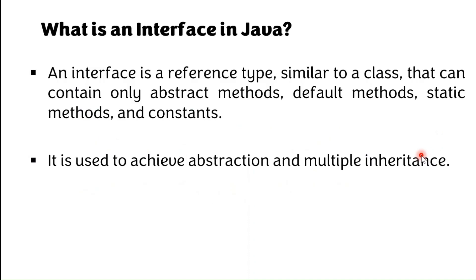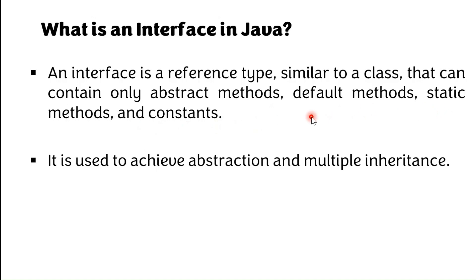An interface is a reference type, similar to a class, that can contain only abstract methods, default methods, static methods, and constants. After Java 8, the default method and static method have been introduced. Before that, the interface consisted of only abstract methods and constants.